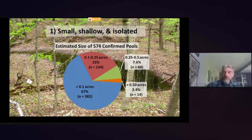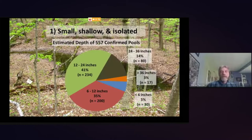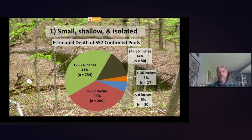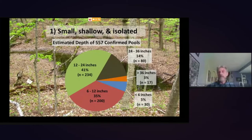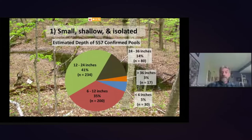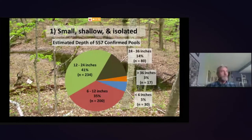Regarding depth, the biggest chunk of visited pools were between one and two feet deep — 41 percent — and the next large group was between six inches and twelve inches. About 75 percent of pools visited were less than two feet deep. A small percentage were between two and three feet, and some were over three feet, but six to twenty-four inches is very common.